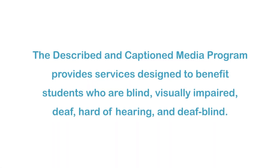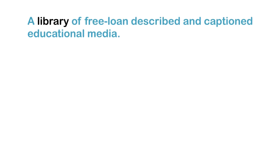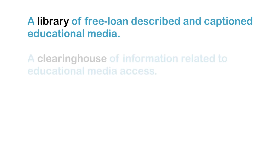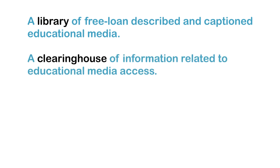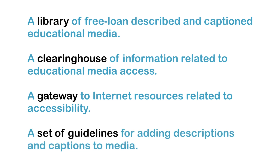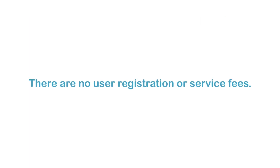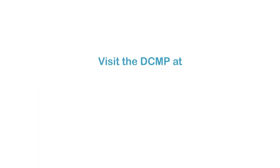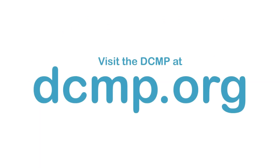The Described in Caption Media Program provides services designed to benefit students who are blind, visually impaired, deaf, hard of hearing, and deafblind. These services include a library of free loan described and captioned educational media, a clearinghouse of information related to educational media access, a gateway to Internet resources related to accessibility, and a set of guidelines for adding descriptions and captions to media. There are no user registration or service fees. Visit the DCMP at dcmp.org.